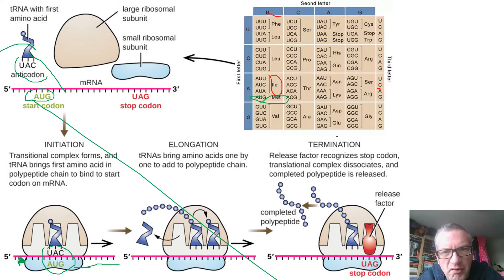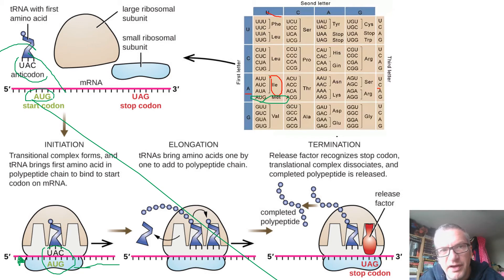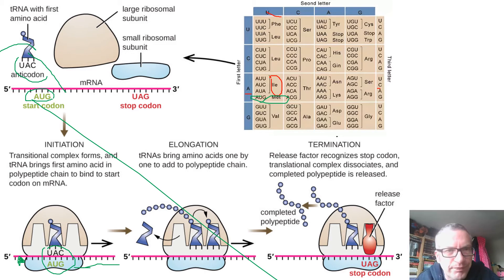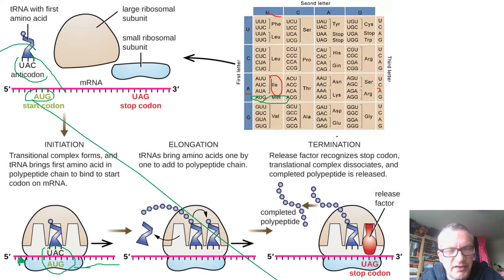From our codon dictionary, we can see that AUG encodes methionine, so the first amino acid is methionine. It just so happens that the first one is actually a formyl-methionine — slightly modified. The lecture explains why that is the case.